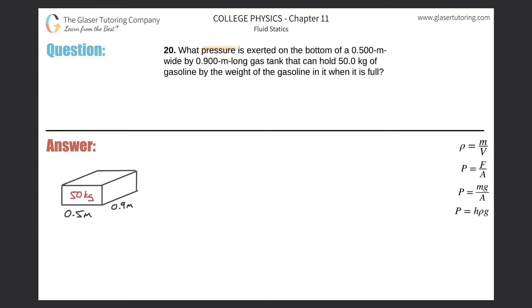Number 20: What pressure is exerted on the bottom of a 0.5 meter wide by 0.9 meter long tank that can hold 50 kilograms of gasoline by the weight of the gasoline when it is full?